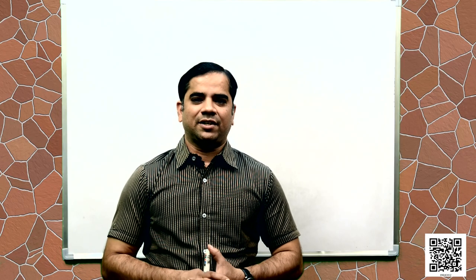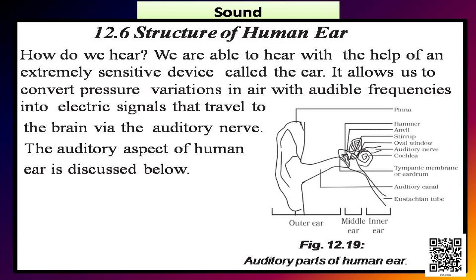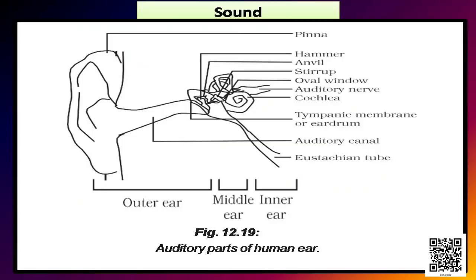Let us now discuss structure of human ear. How do we hear? We are able to hear with the help of an extremely sensitive device called the ear. It allows us to convert pressure vibrations in air with audible frequencies into electric signals that travel to the brain via the auditory nerve. Let us discuss the auditory aspect of human ear. Just concentrate on figure 12.19 that is given in your book.